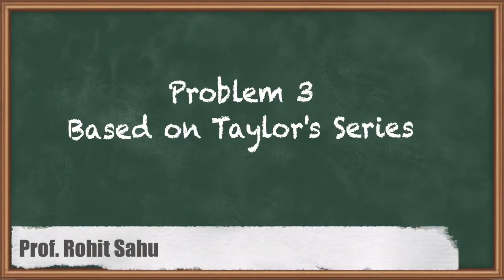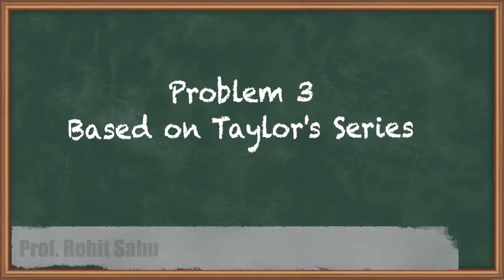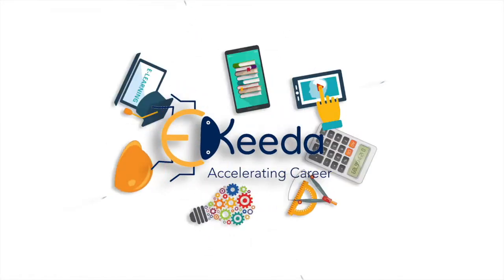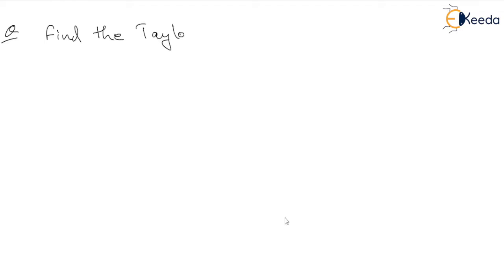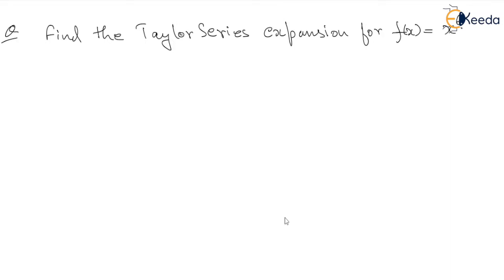Hello everyone. In this session we'll see another question — the third one on Taylor Series. Find the Taylor Series expansion of f(x) = x⁶ · e^(2x³) about the point x = 1.